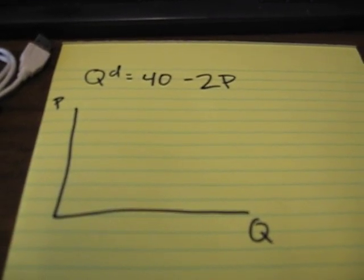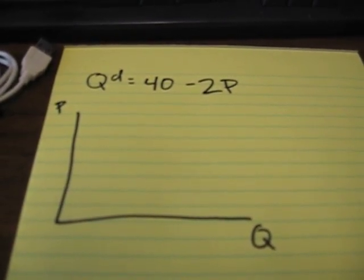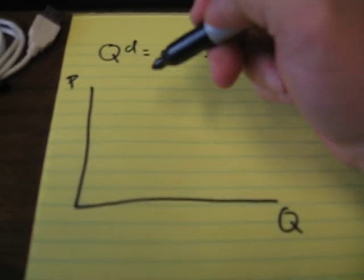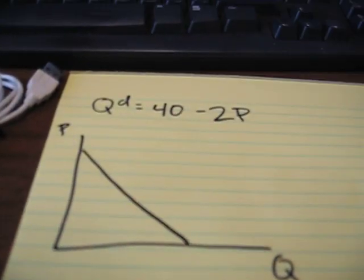All right, so this is how to graph a demand curve. Quantity demanded is equal to 40 minus 2p. Demand curve is always a straight line, like that.